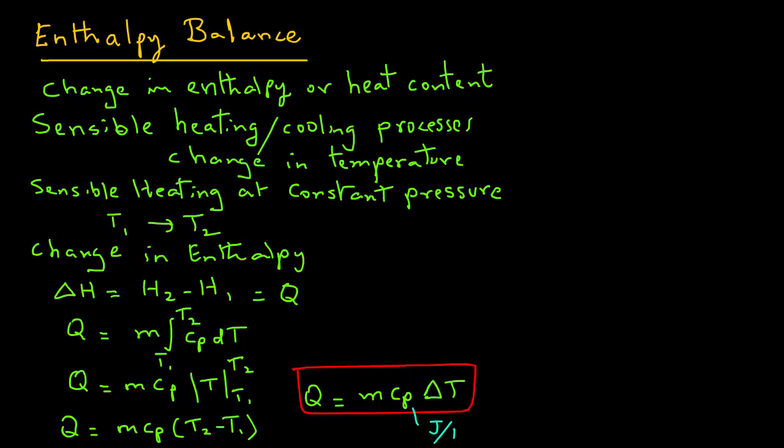Note that these units for specific heat are joules per kilogram degree C. The units for M mass are kilograms and the units for temperature, of course, are degrees Celsius. So the change in the enthalpy content delta H, the units are joules.